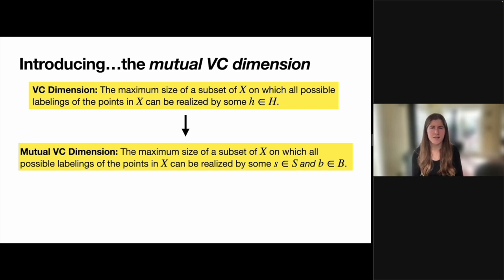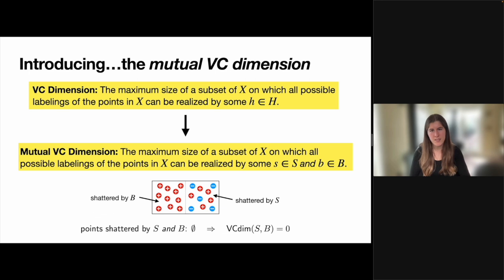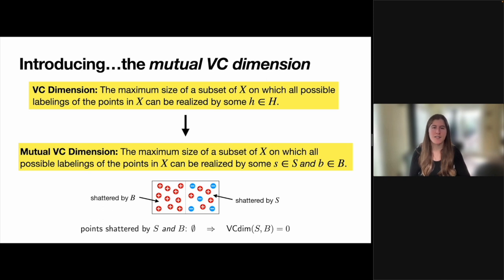While the VC dimension in the standard setting looks at the size of the largest subset shattered by a single hypothesis class, the mutual VC dimension considers the collection of subsets shattered by a hypothesis class S, as well as the collection of subsets shattered by a second hypothesis class B, and then returns the size of the largest subset that lies in the intersection of these two collections. Going back to our previous example, the entire left portion of the domain was shattered by B while the right portion was shattered by S. However, these two regions were completely disjoint, so there were actually no points shattered by both classes simultaneously. This means the mutual VC dimension of the two classes was zero, supporting a conjecture that the mutual VC dimension characterizes the sample complexity of comparative learning.